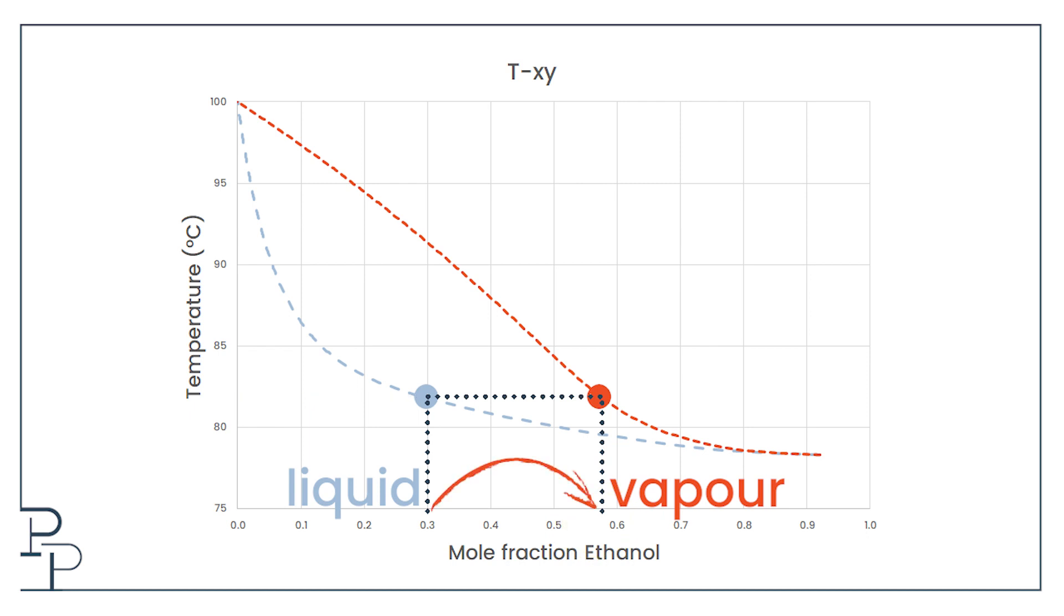The amount of ethanol in the vapor is pretty much always higher than it is in the liquid, and the longer you boil, the more the concentration of ethanol in both liquid and vapor drop.